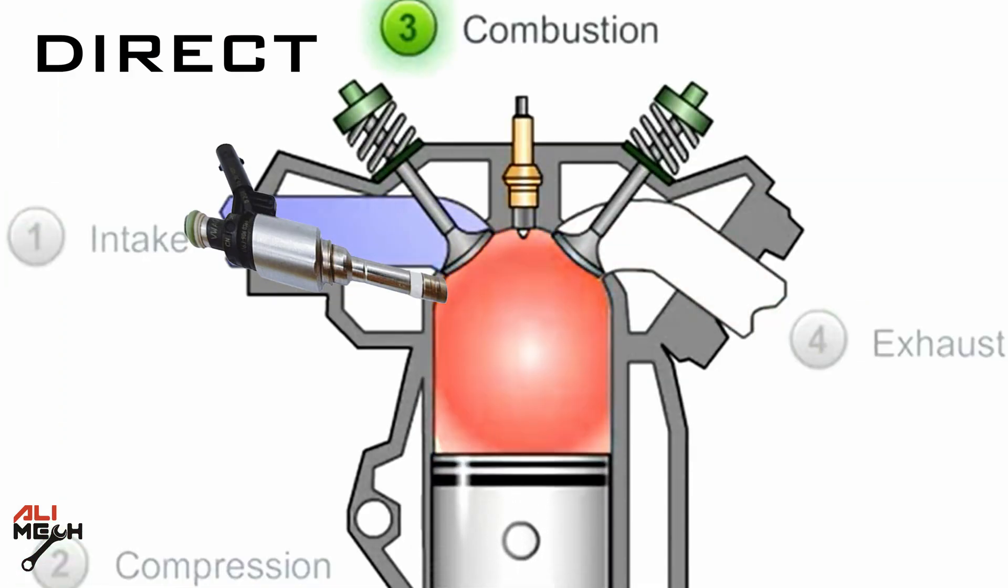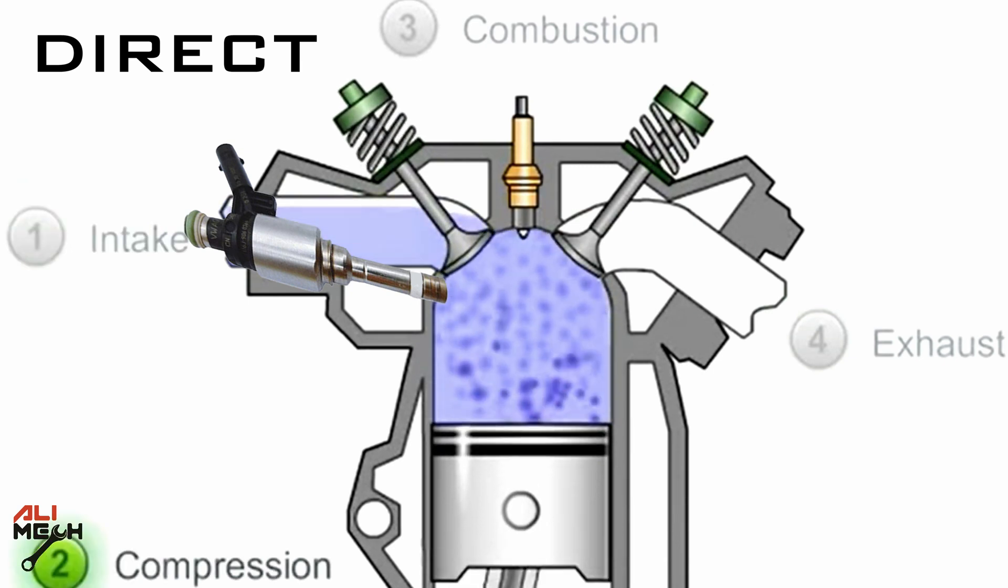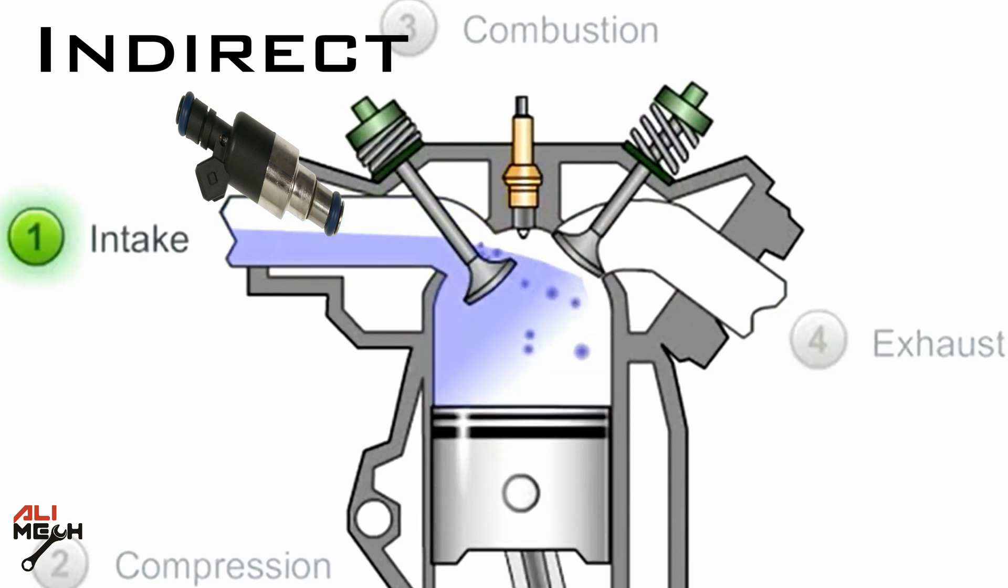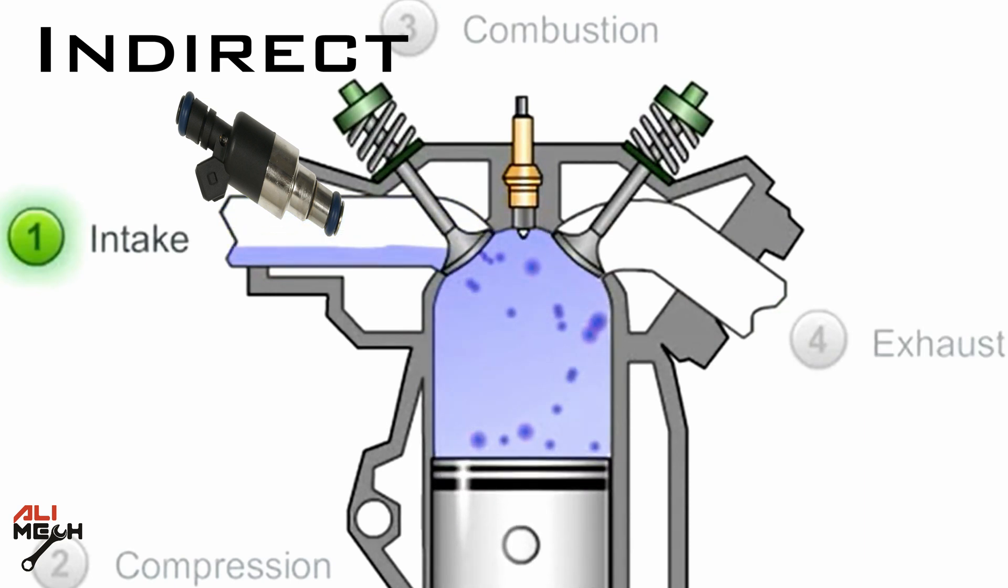Direct fuel injectors inject fuel directly into the combustion chamber, while indirect fuel injectors inject fuel into the intake manifold before entering combustion chamber. So it will be before intake valves.